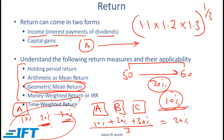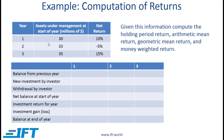Money weighted return, as we saw in quantitative methods, is simply the internal rate of return. We look at the money going in, the money coming out, and compute the IRR — that is the money weighted return. It makes sense to use this measure when the investment manager is in charge of the timing of cash flows.